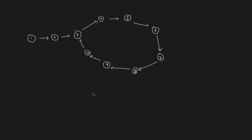If you are in an interview, the first approach you'll tell the interviewer is the brute force approach using a hash table to detect the starting point of the loop. You create a hash table and traverse the linked list starting from the head, taking the entire node and hashing it. It's important to hash the entire node because there can be multiple nodes with the same value — for example, two nodes both having value 3 — and you don't want to treat them as equal.